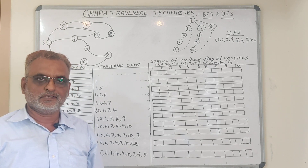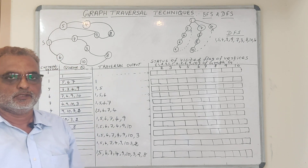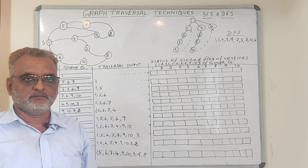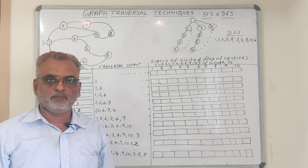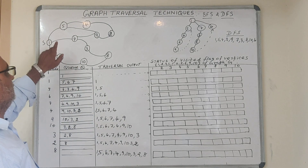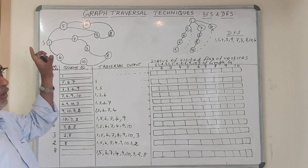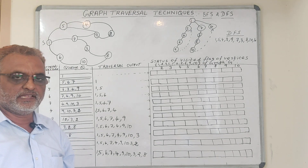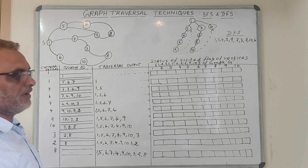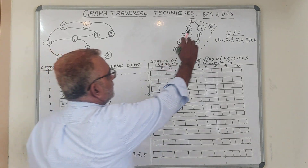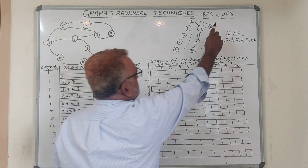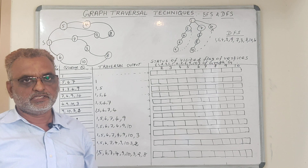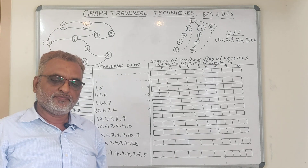Greetings to all, this is Professor Shahnavas. Today we are going to discuss graph traversal techniques in data structures and algorithms. This is a given graph and how to traverse it. We have two different techniques available for traversal: one is called BFS and another is DFS. BFS stands for breadth first search and DFS is depth first search.